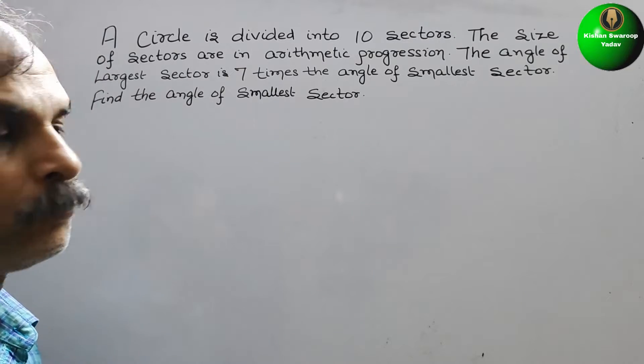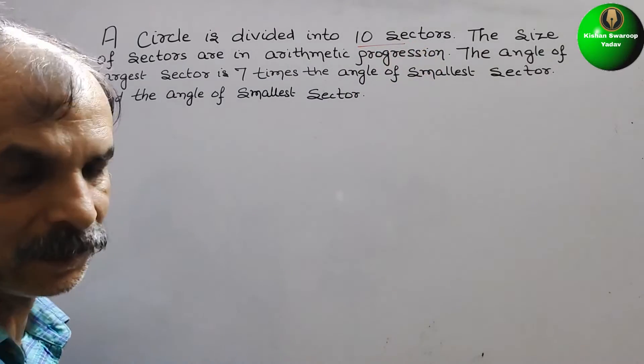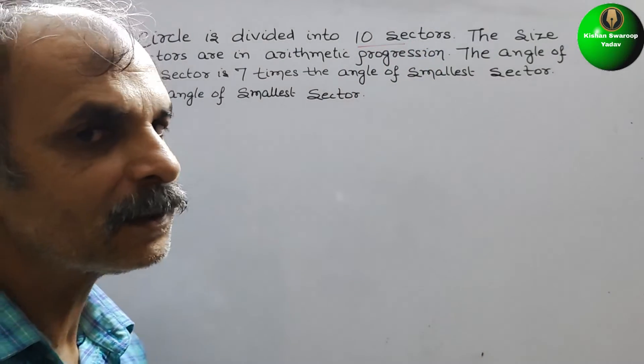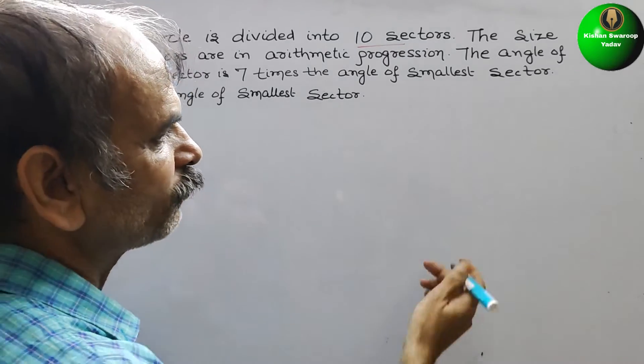See what they have told. Initially, they have told we have divided into 10 sectors. That means the number of sectors is 10. So n is equal to 10.